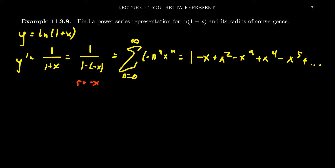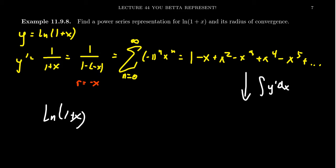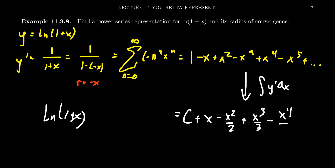Recognizing that this function is the derivative of the function we started with, we can get back up to the natural log of 1 plus x by taking the antiderivative. So we just need to integrate this function. Taking the integral of y prime dx, this would give us some constant — I always like to put that in the front because as this is an infinite series, if we put it at the end, there is no end. So put it in the front: C plus x minus x squared over 2 plus x cubed over 3 minus x to the 4th over 4 plus x to the 5th over 5, and that pattern continues.